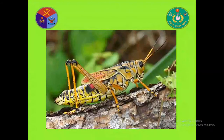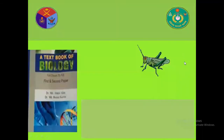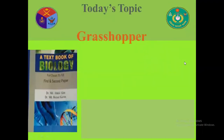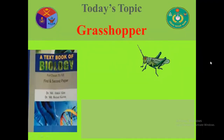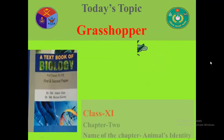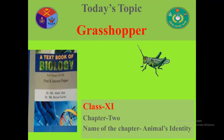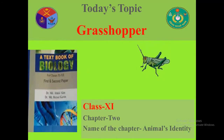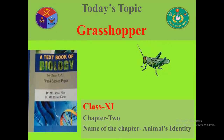You can see an image of an animal. Do you know what is the name of this animal? Yes, this is a Grasshopper. So my today's topic is Grasshopper. This class is for Class 12, and my today's topic is included in Chapter 2. The name of the chapter is Animal's Identity.